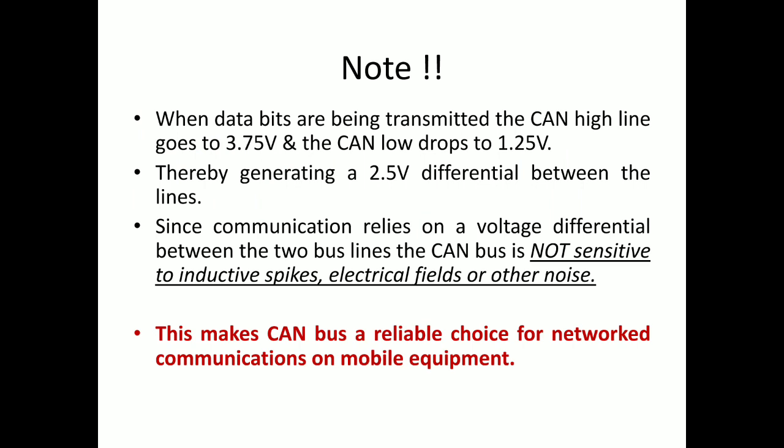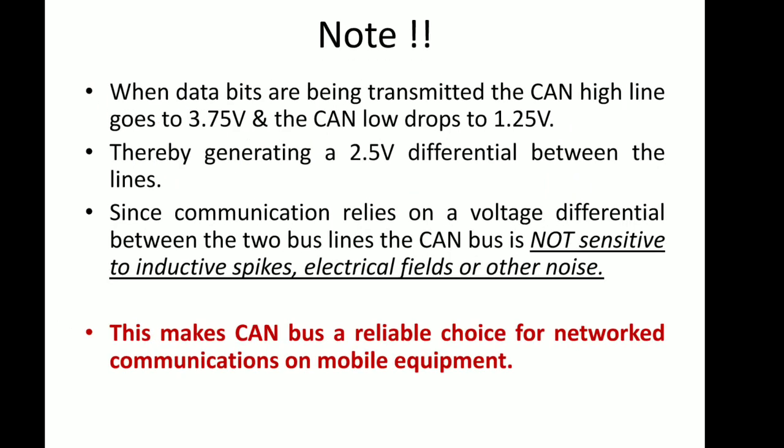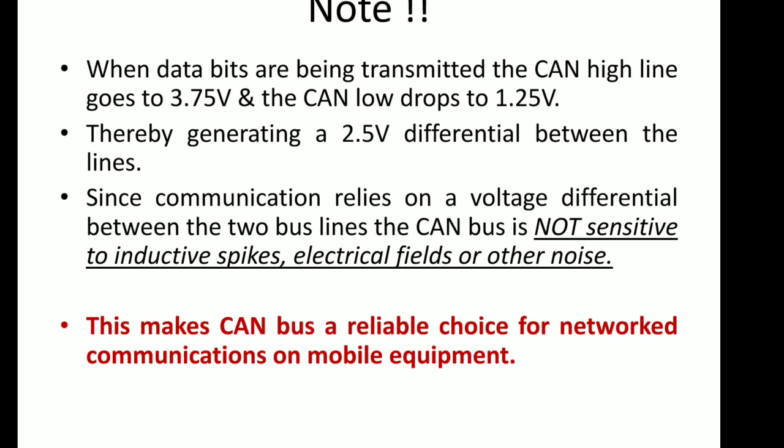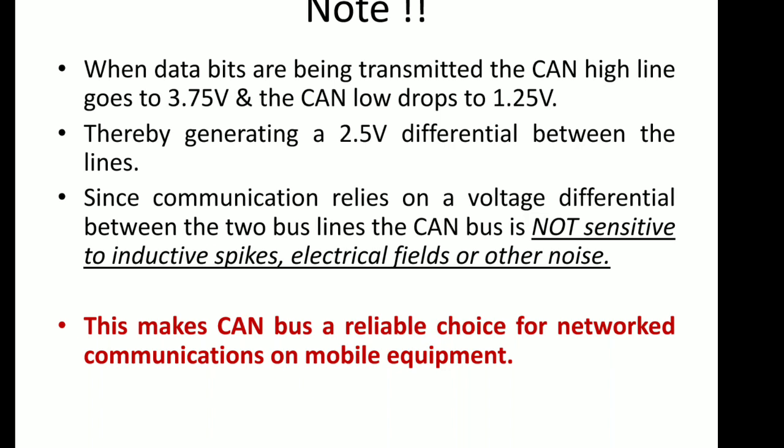This is mainly because of the 120 ohm resistor. This makes the CAN bus more reliable. CAN communication is not sensitive to inductive spikes (sudden increase or decrease), electrical fields, or other noises. This makes CAN a reliable choice for networked communication on mobile equipment.